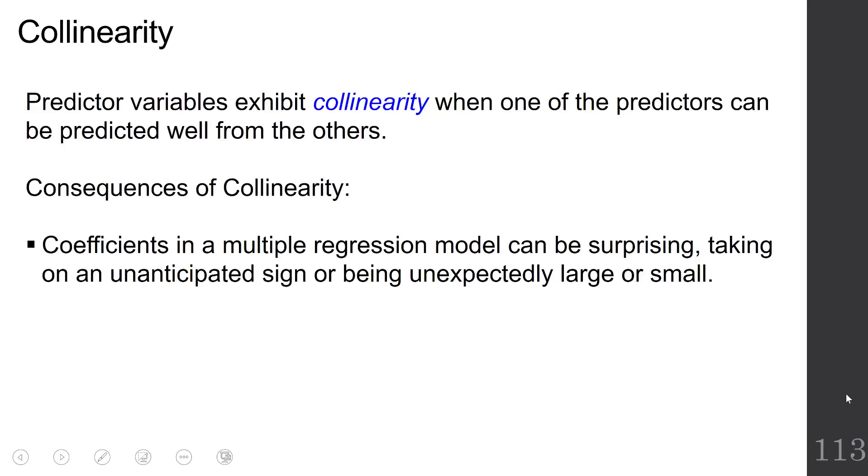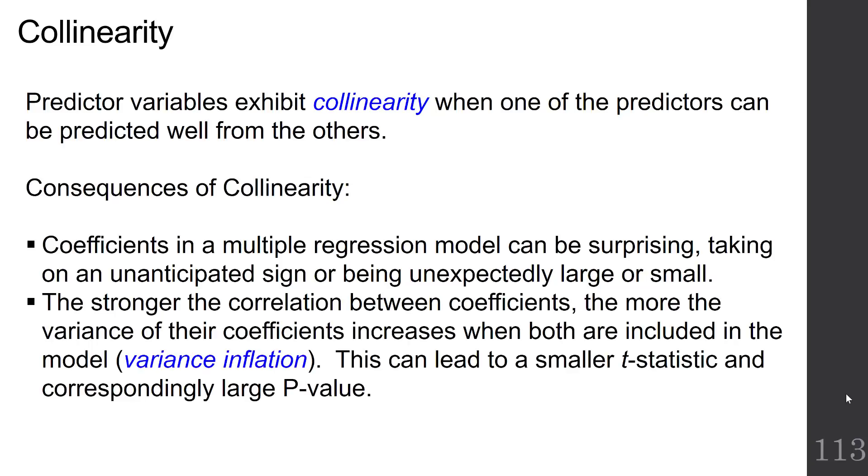Consequences of collinearity are the coefficients in a multiple regression model can be surprising, taking an unanticipated sign or being unexpectedly large or small. The stronger the correlation between coefficients, the more the variance of their coefficients increases when both are included in the model. This is called variance inflation. This can lead to a smaller t-statistic and a correspondingly large p-value.